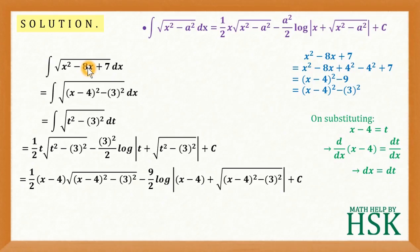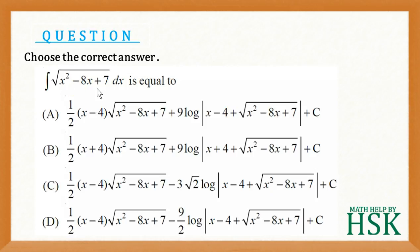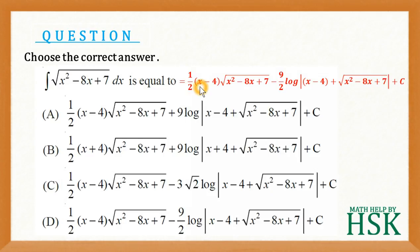The final answer becomes: (1/2)(x − 4)√(x² − 8x + 7) − (9/2) · log(x − 4 + √(x² − 8x + 7)) + C. Reviewing the options, the integral equals (1/4)(x − 4)√(x² − 8x + 7) − (9/2) · log(x − 4 + √(x² − 8x + 7)) + C, matching one of the given choices.